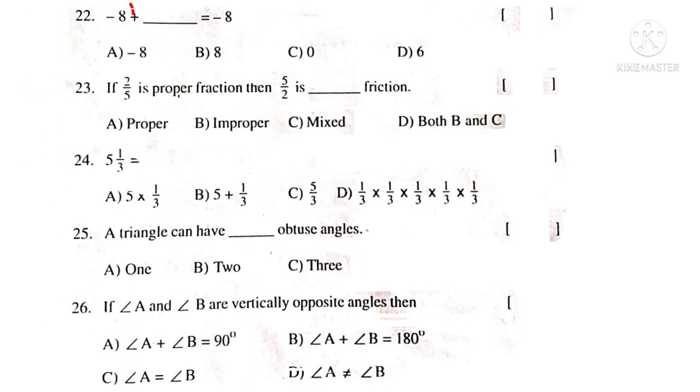Now, 22nd. Minus 8 when added to which number gives the same number minus 8. It is possible when it is added to 0. So, the correct choice is C.